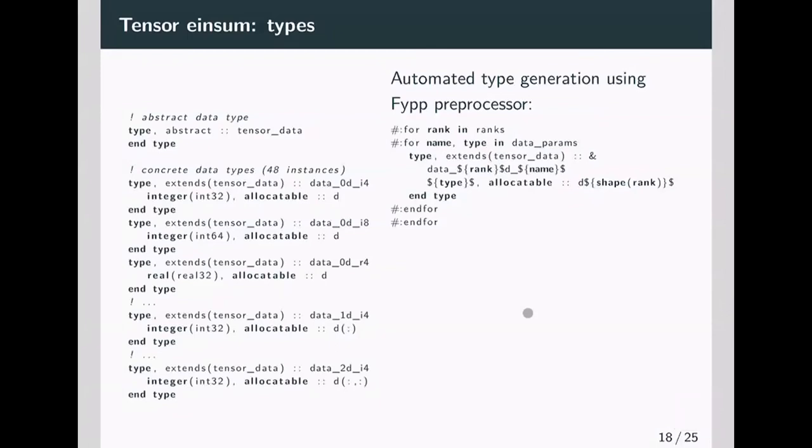Here's how it's done in practice. I have my abstract type. Then I have several instances which are just arrays of different ranks and different data types. I said before, you have many of those, so it's better to generate them using a preprocessor. And this is how it's done with the FYPP preprocessor. I would say it's much more compact, but it's also ugly and hard to read, but it's very compact and much easier to maintain.